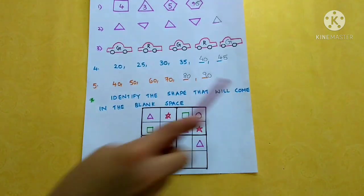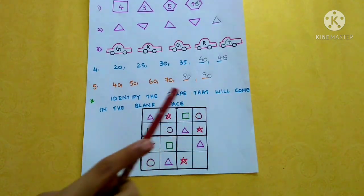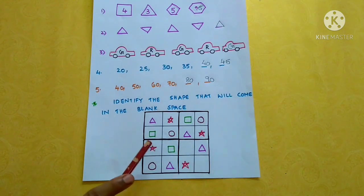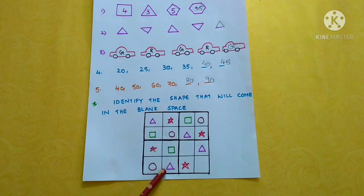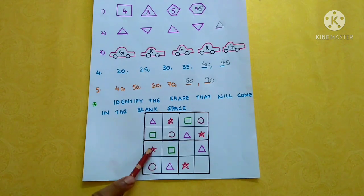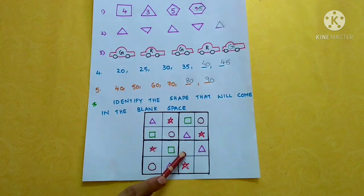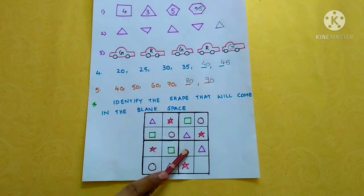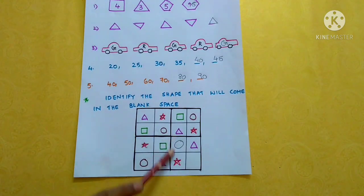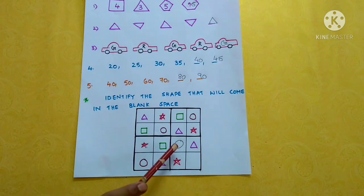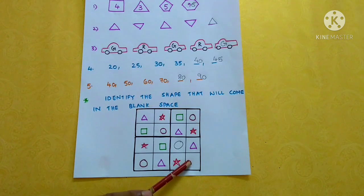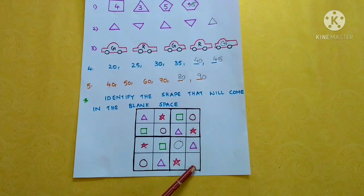Identify the shape that will come in the blank space. This is a 4x4 Sudoku. It consists of 4 different shapes: square, star, circle, and triangle. Now let's fill this blank. The row consists of star, square, and triangle, but it does not consist of a circle. In the next box, it consists of 3 shapes — triangle, circle, star — but it does not consist of square. So this box should be filled with a square.